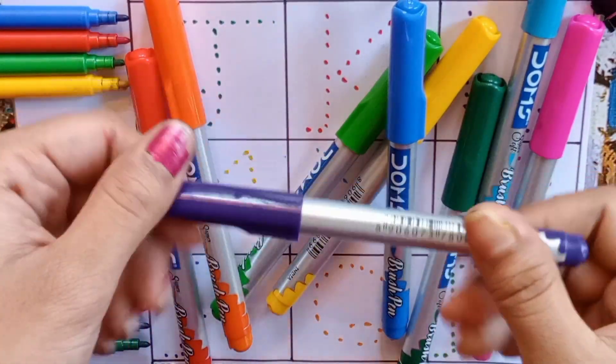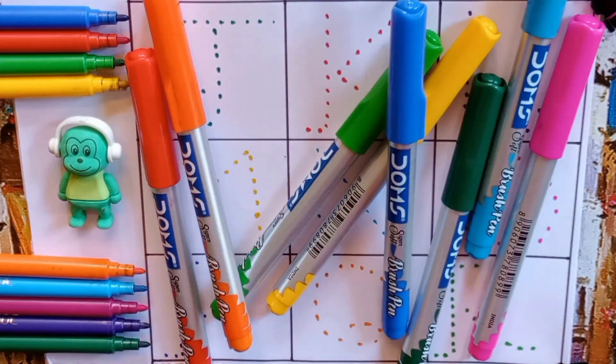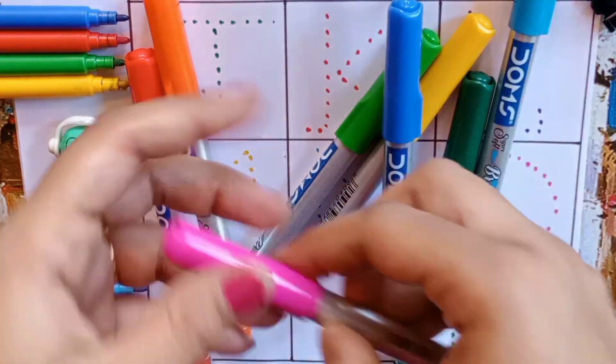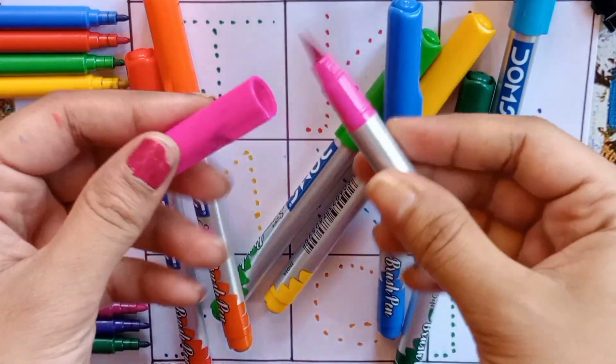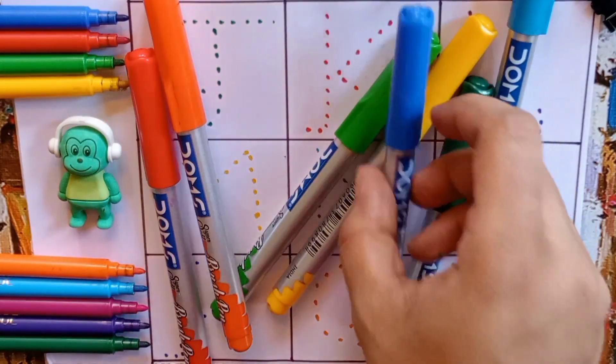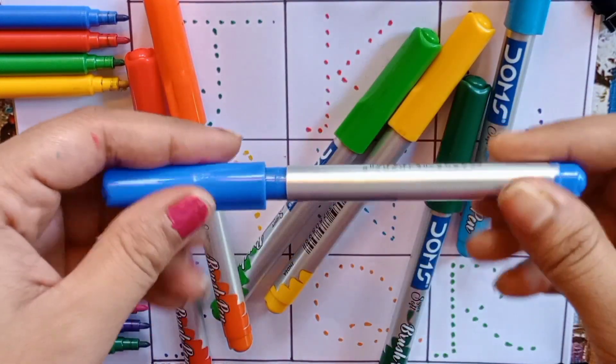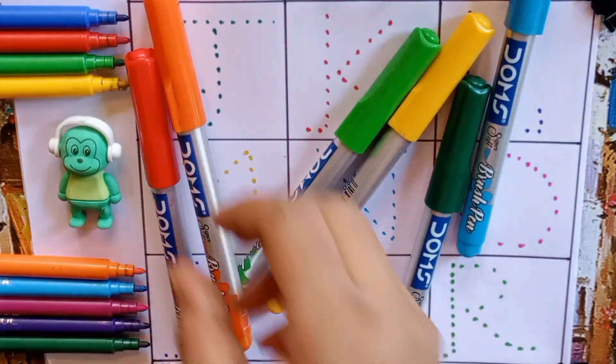Let's learn the colors. Our first color is purple. Second color is pink. Third color is blue. Our fourth color is orange.